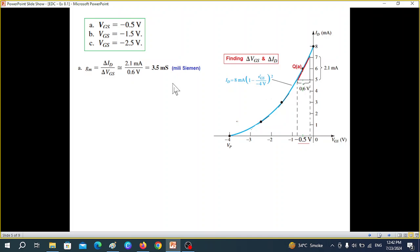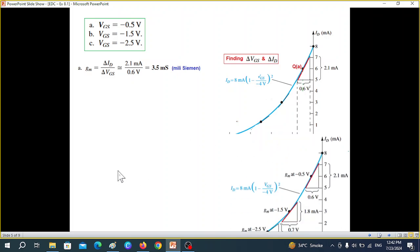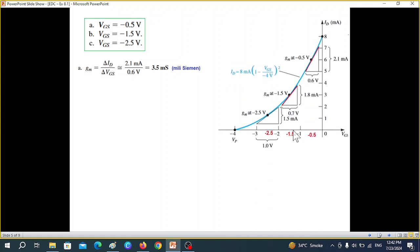Now the second one is minus 1.5. So it will be somewhere here. Same way we draw the tangent line. We find the difference in ID and then difference in VGS. And plugging in the values 1.8 and 0.7, we get GM to be 2.57 milli Siemens.